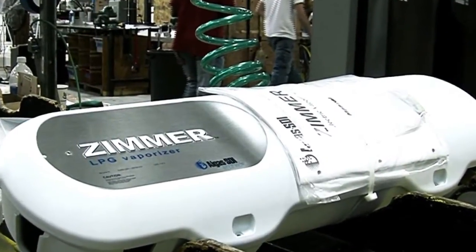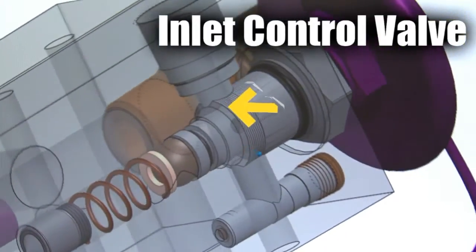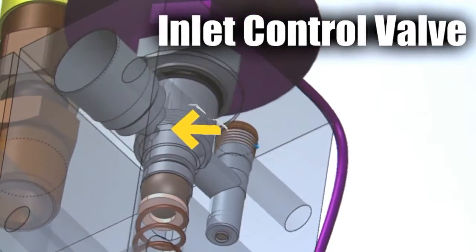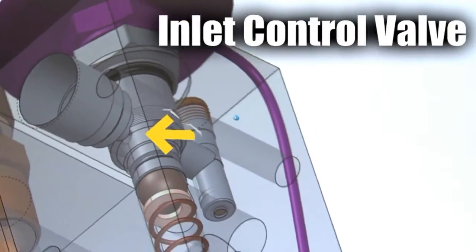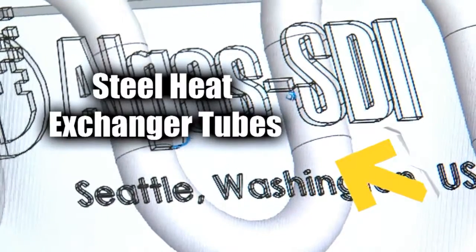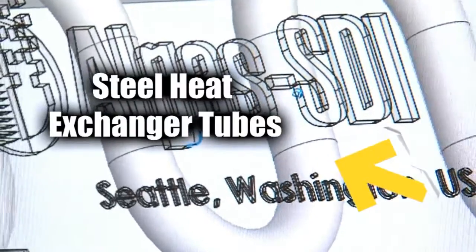Liquid LPG enters Zimmer via its inlet control valve. The inlet control valve's inverted metal-to-metal seat provides durability and prevents debris from collecting on the valve seat. Liquid LPG next enters Zimmer's steel heat exchanger tubes.